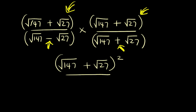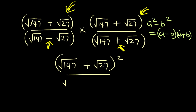The expression for difference of two squares: if you have a squared minus b squared, this is expressed as a minus b times a plus b. So in this case our a is root 147, so we square that, and b is root 27.